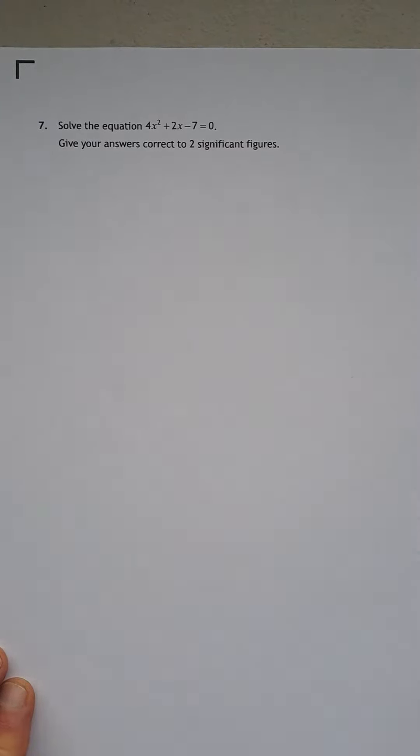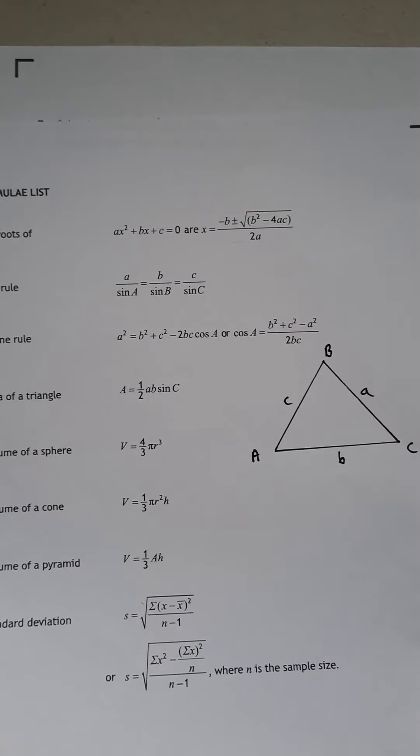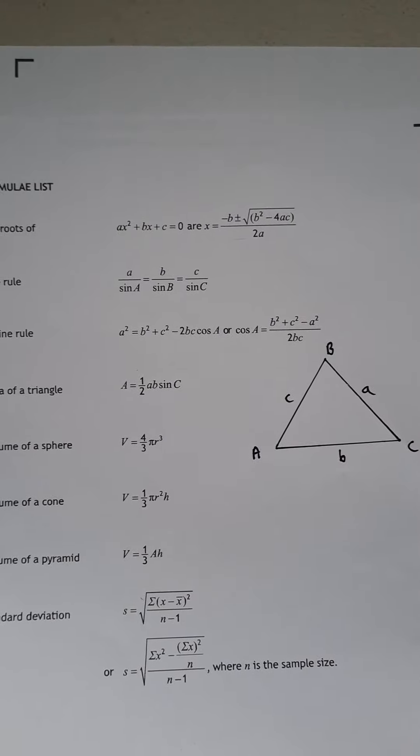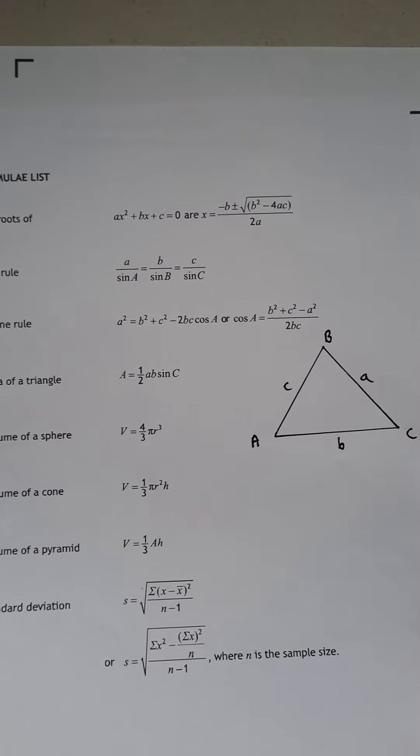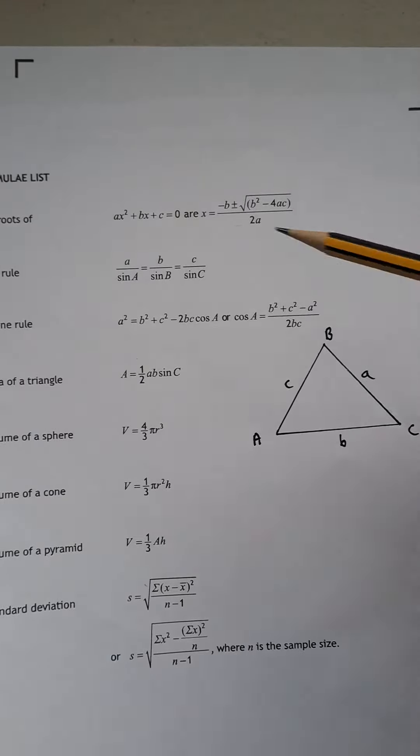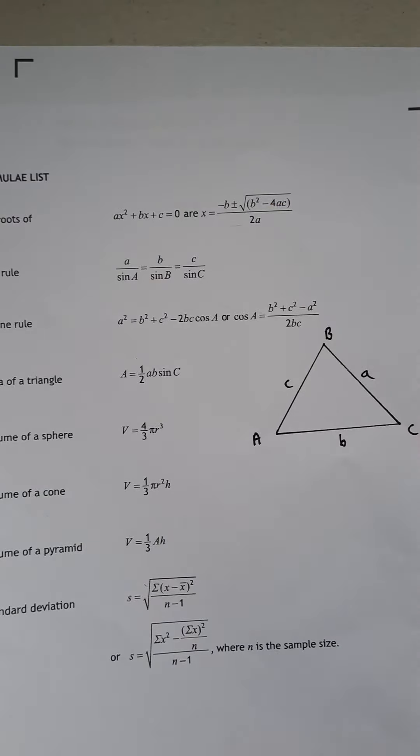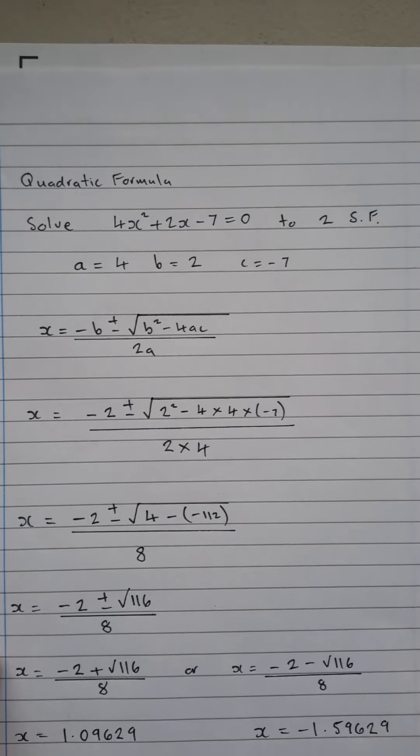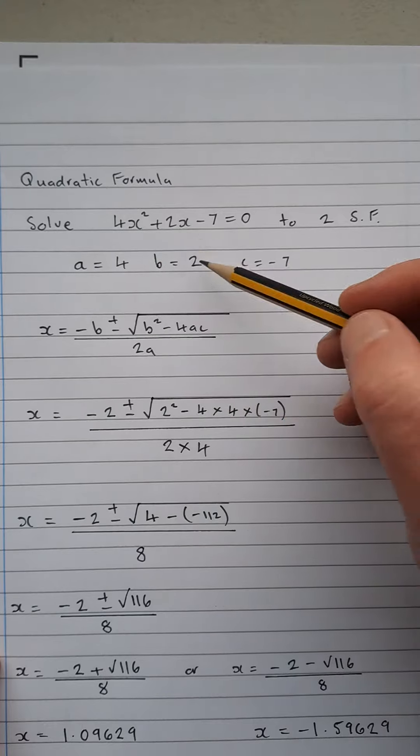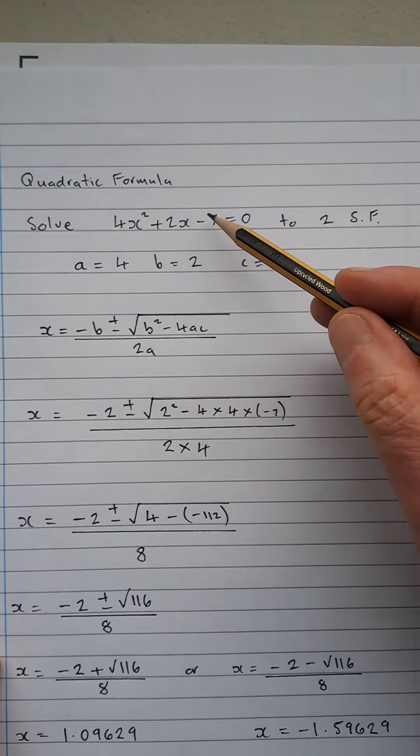So this is a straightforward use of the quadratic formula that you're given at the very top of your formula sheet here. So we have ax² + bx + c = 0 and there's the formula there. So let's get some numbers for the formula here. There we have it there. So it's ax² so a is 4, b is 2 and c is minus 7.